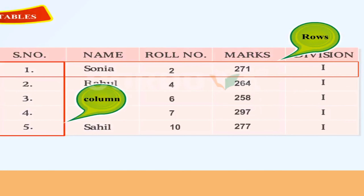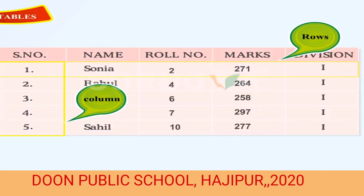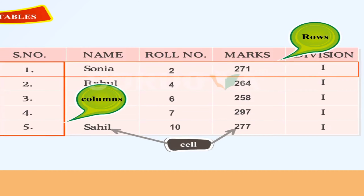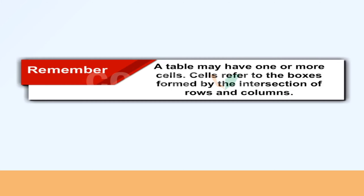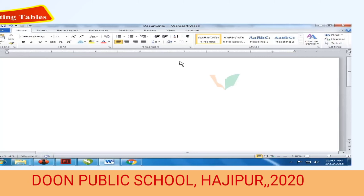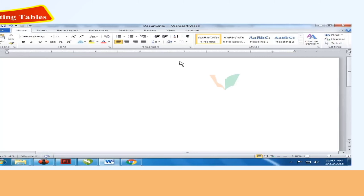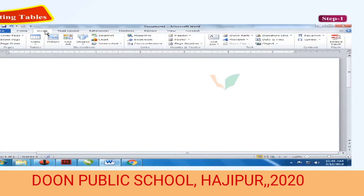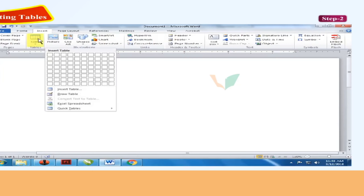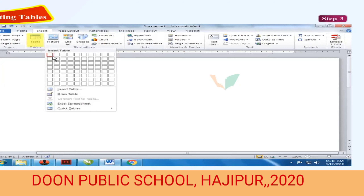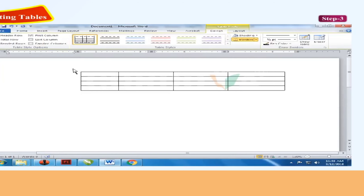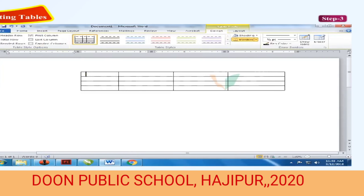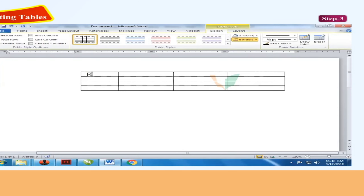A table is made up of rows and columns. The intersection of rows and columns creates boxes called cells. Tables are often used to organize and present information — a table may have one or more cells. To insert a table in MS Word: Step 1: Click the Insert tab. Step 2: Click Table from the table group. Step 3: Select the number of columns and rows by dragging the mouse over the small boxes. This inserts a table with the specified number of columns and rows. The cursor is placed in the first cell and you can enter text in the cells.